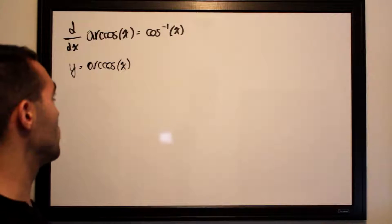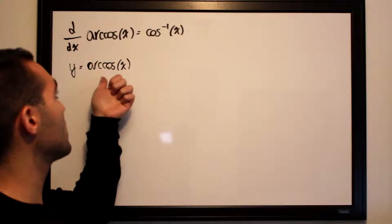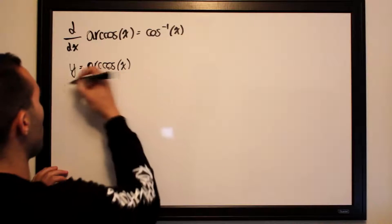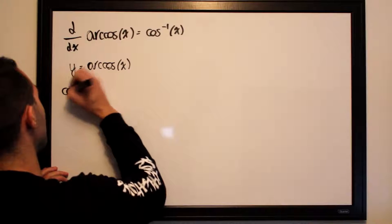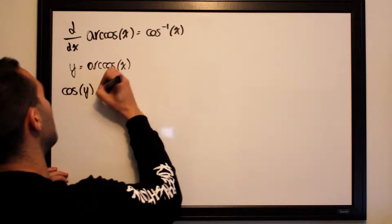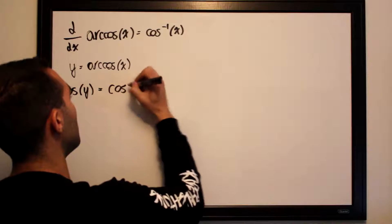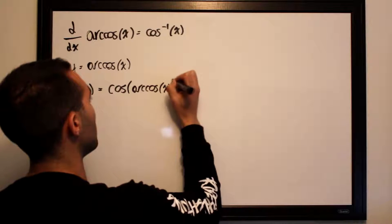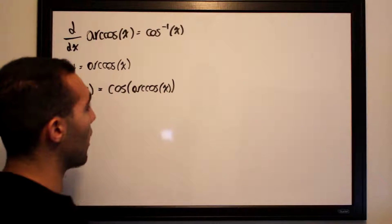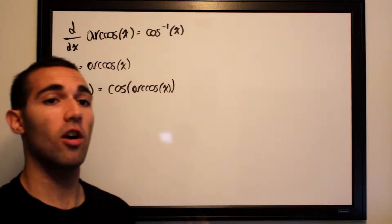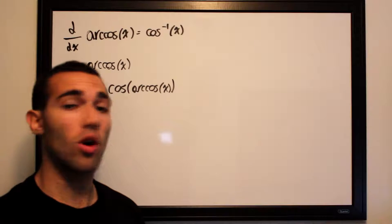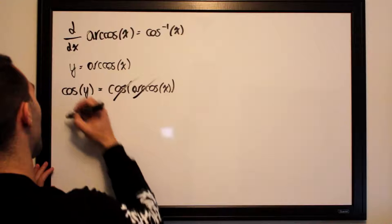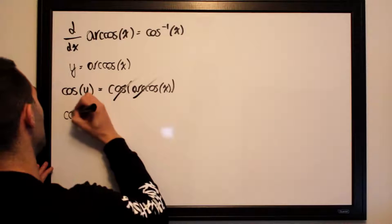Now what we want to do is isolate x — so we want to cancel out this arc cosine of x. We will take the cosine of both sides: cosine of y is equal to the cosine of arc cosine of x. The cosine and arc cosine cancel each other out, leaving us with cosine of y is equal to x.